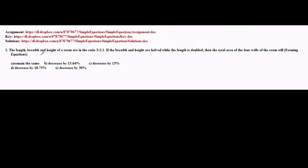So let's start. In this problem it goes like this: length, breadth and height of a room are in ratio 3:2:1. If breadth and height are doubled while length is doubled, then the total area of 4 walls of the room will remain the same, decrease by 13.64%, decrease by 15%, decrease by 18.75%, or decrease by 30%. The question asks what will happen to the area of 4 walls after certain operations on length, breadth and height.